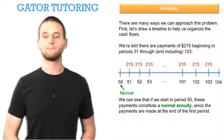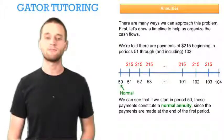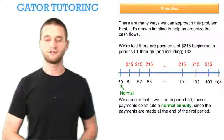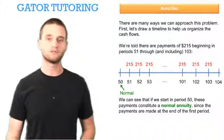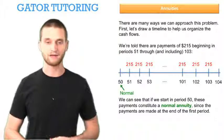We can see that if we start in period 50 these payments constitute a normal annuity since the payments are made at the end of the first period. So if we were to start in period 50 that first payment of $215 occurs one period from now, the present if we're standing at period 50.